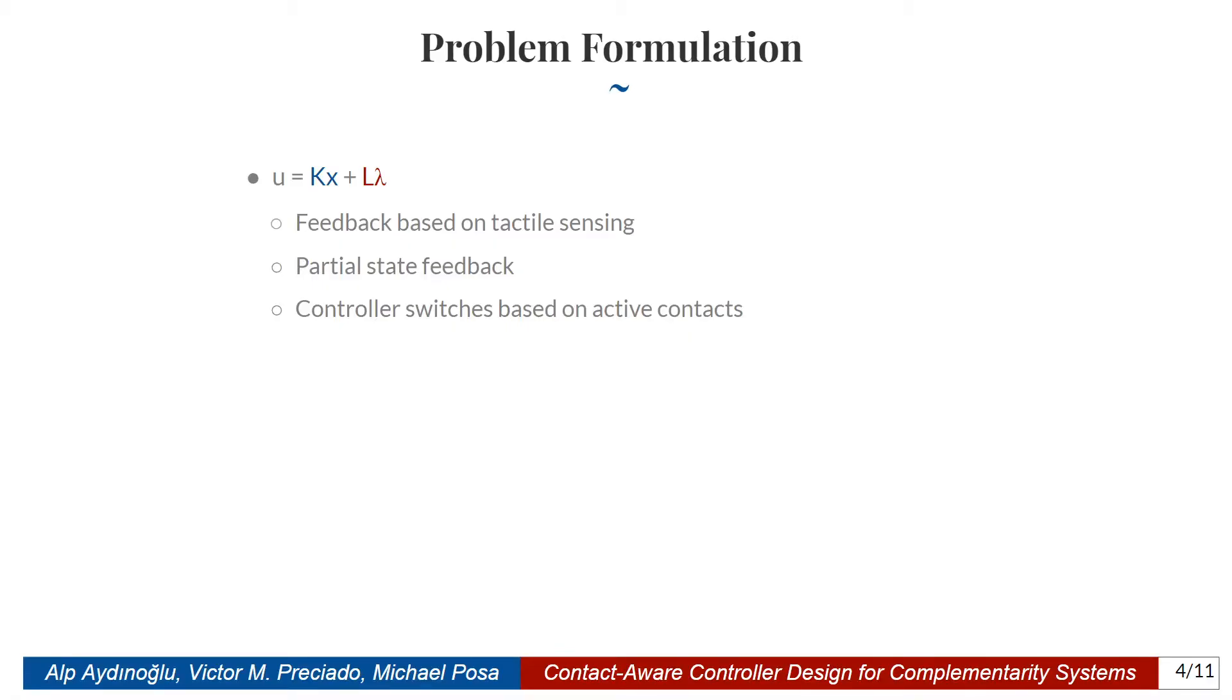In this work, our goal is to design a controller of the form U equals KX plus L lambda, which can incorporate tactile sensing. One other good property of our controller is that, if there is only partial state feedback, our controller can compensate for this using the L lambda terms. Third, our controller switches based on which contacts are active.